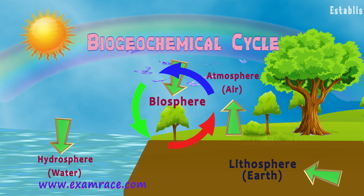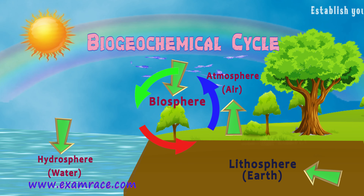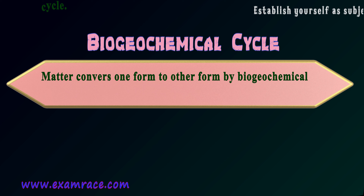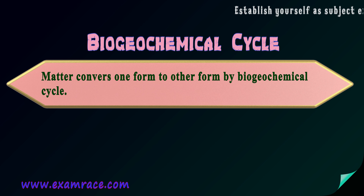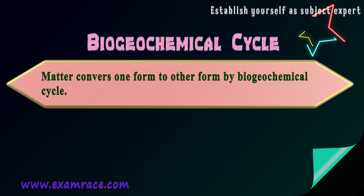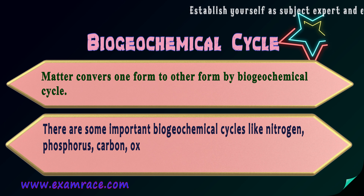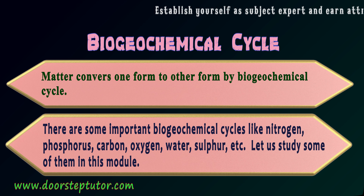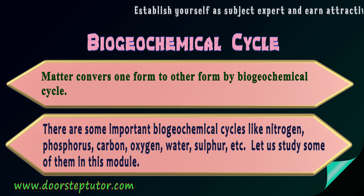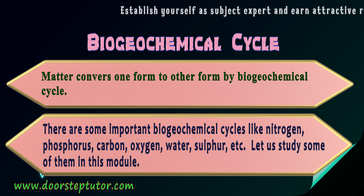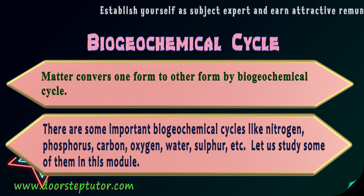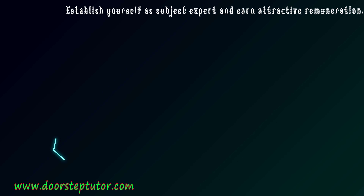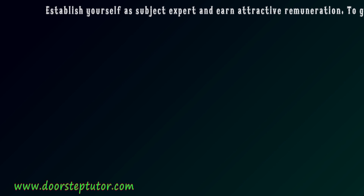In the cyclic process, chemical elements and molecules are moved from the atmosphere to the hydrosphere to the biosphere to the lithosphere. Matter converts from one form to another by the biogeochemical cycle. Some important biogeochemical cycles are the nitrogen cycle, phosphorus cycle, carbon cycle, oxygen cycle, water cycle, and sulfur cycle, among others.